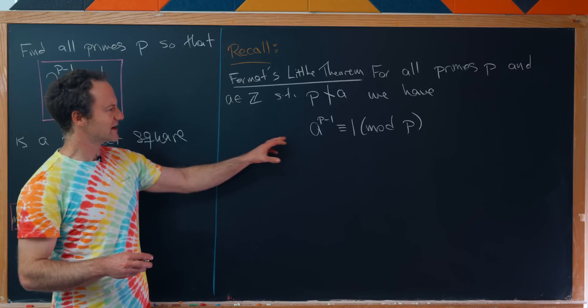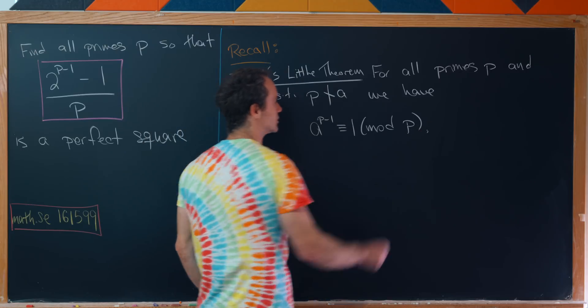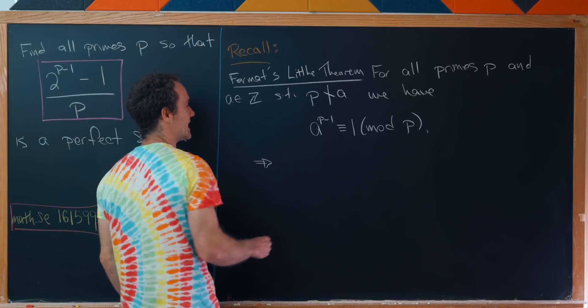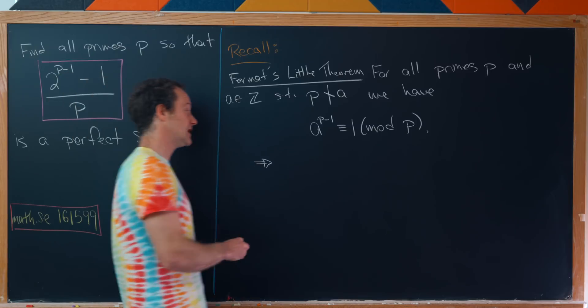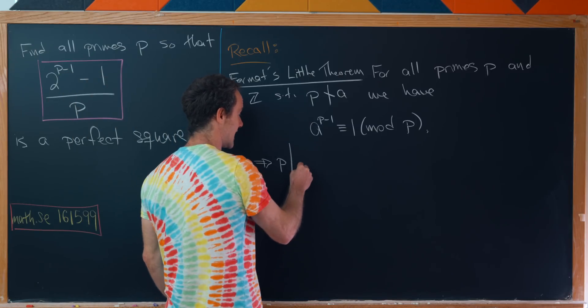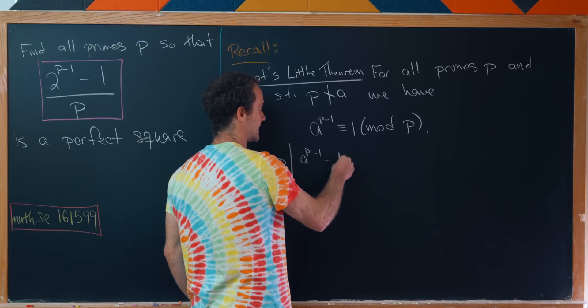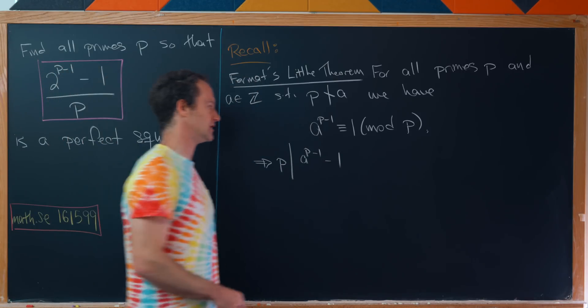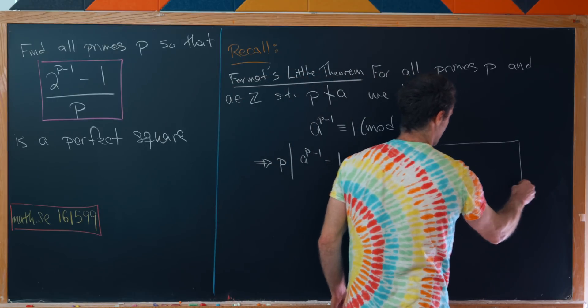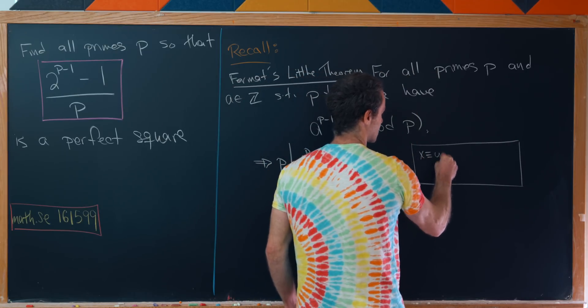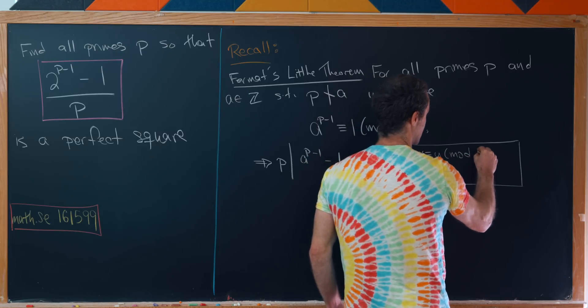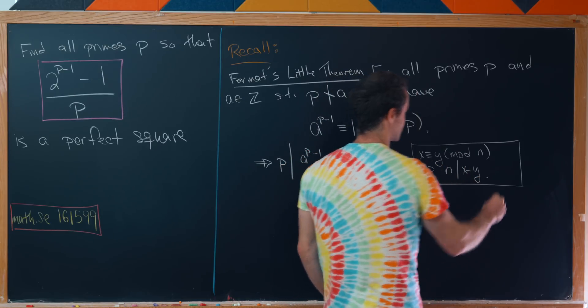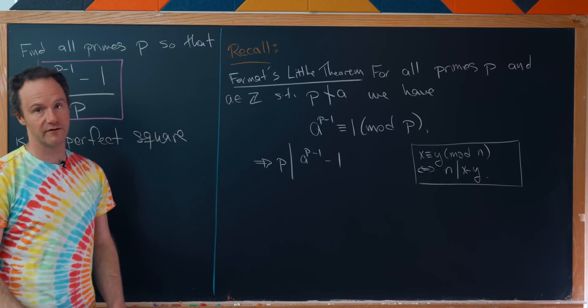Let's take this equation which is the conclusion of Fermat's Little Theorem and work with it. If a^(p-1) is congruent to 1 mod p, that means p divides a^(p-1) - 1. That's just by the definition of congruence mod p. We say x is congruent to y modulo n if and only if n divides x - y.